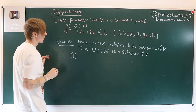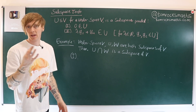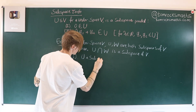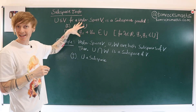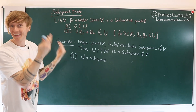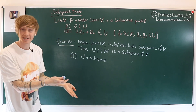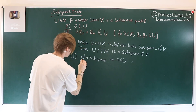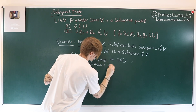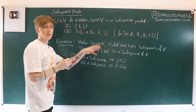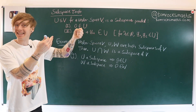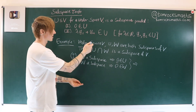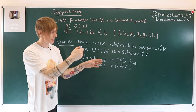For property one, we need the zero vector to be in the intersection U∩W. Since U is a subspace, it satisfies the subspace test, so zero belongs to U. Since W is a subspace, zero belongs to W as well. Therefore zero is in both U and W, and hence zero belongs to the intersection U∩W. Property one is satisfied.